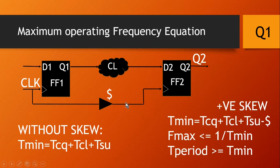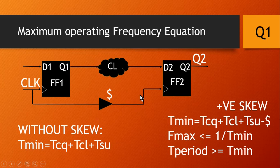Before giving the equation with positive skew, let me state the equation when there is no skew and both flops receive clock at the same time. T_minimum equals Tcq of the first flip-flop, plus Tcl (propagation delay of the combinational logic), plus setup time of the second flip-flop. With positive skew, the revised T_minimum equals Tcq of flip-flop 1, plus Tcl, plus T_setup of the second flip-flop, minus the skew (dollar) added on the clock path.